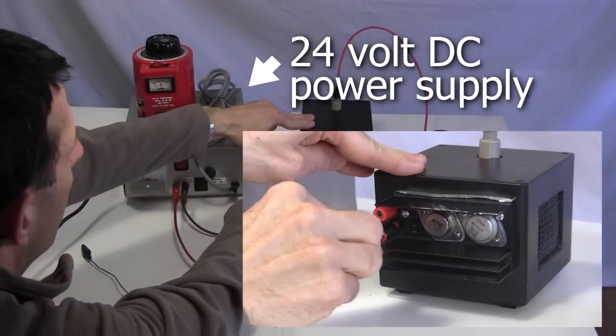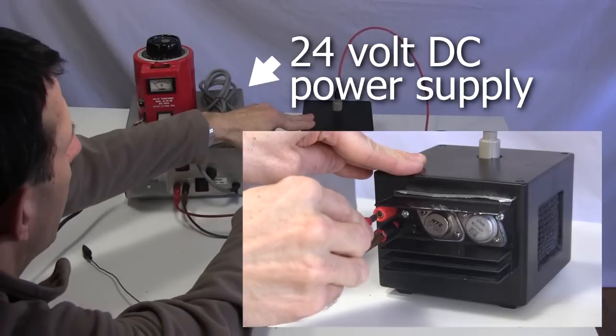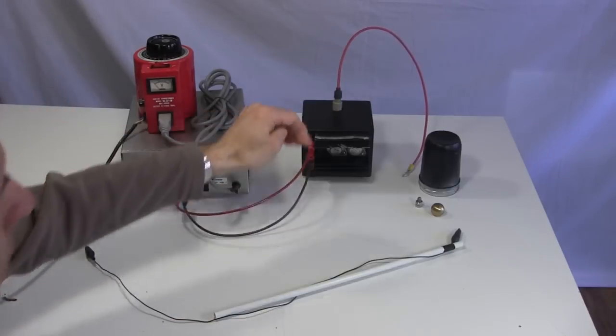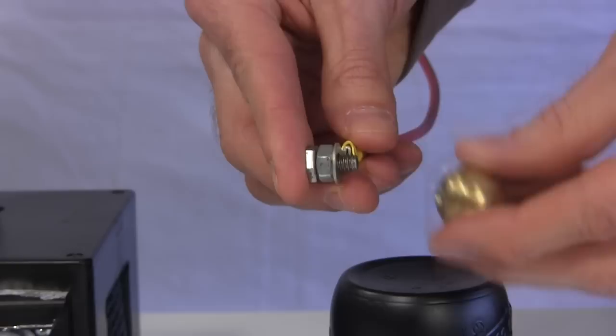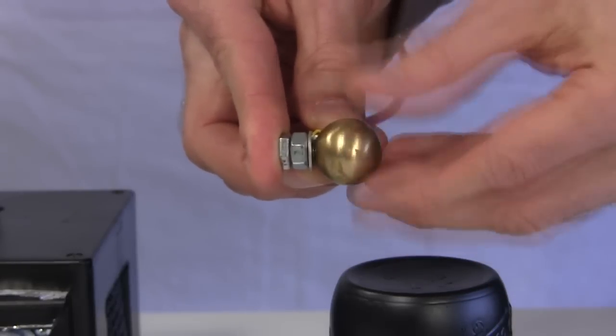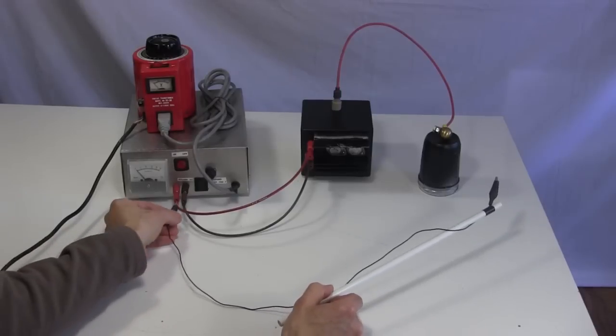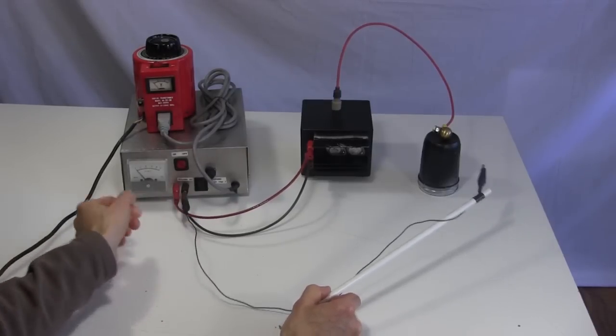Here's my first test setup. I connected the cube to my homemade 24 volt DC power supply. I can vary the input and output voltage using this variac. I attached a brass ball to the output's ring terminal. I connected a long wire to ground with the other end terminating at an alligator clip.